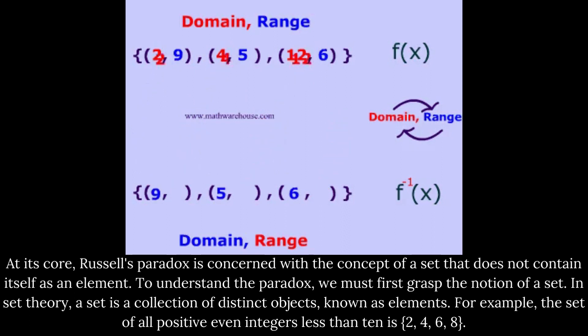In set theory, a set is a collection of distinct objects, known as elements. For example, the set of all positive even integers less than 10 is 2, 4, 6, 8.